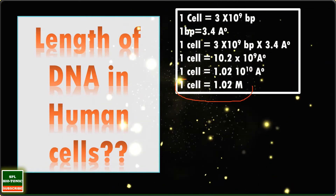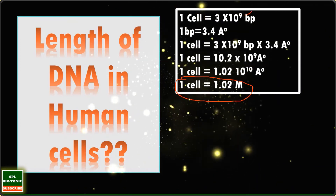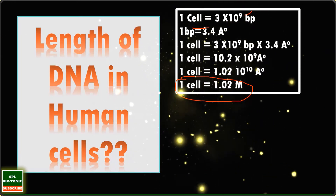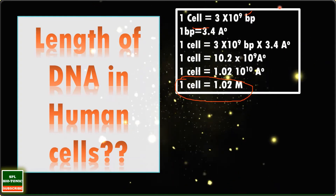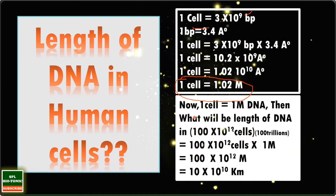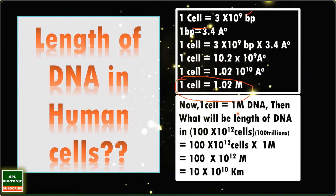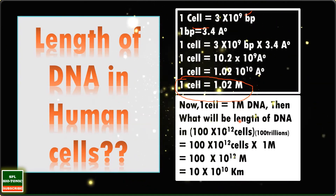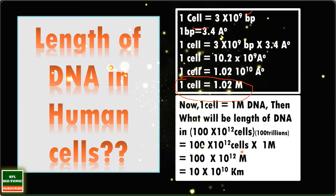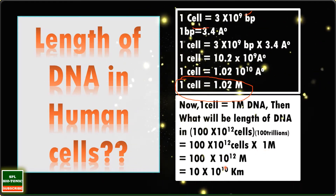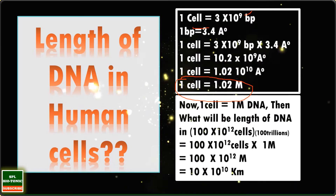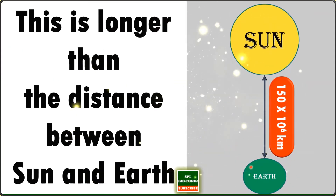Interesting, isn't it? If you don't know the meaning of base pairs or the length of a base pair, I have made a video on the structure of DNA — the link is in the i-section. Now, each cell has around 1 meter of DNA. We have around 100 trillion cells in the human body. Multiplying 100 trillion cells by 1 meter gives us around 10×10^10 kilometers of DNA in the human body — which is surprisingly longer than the distance between the Sun and Earth.